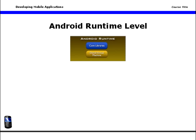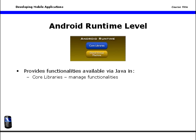Beyond that, the runtime level provides functionalities available via Java in core libraries that manage functionalities, and a Dalvik virtual machine. All Java programs use a virtual machine to compile and deploy Java code on a device.